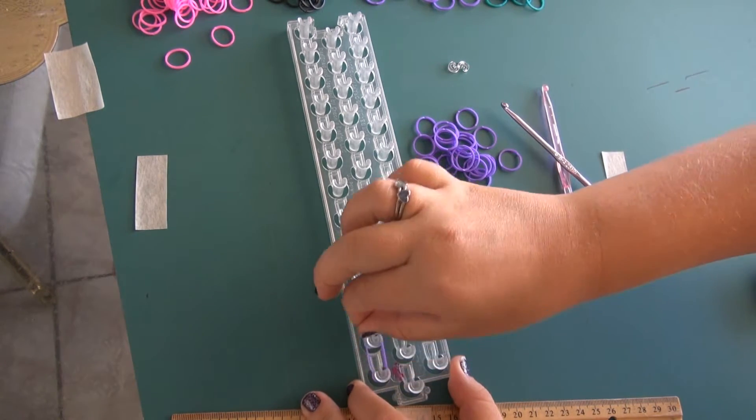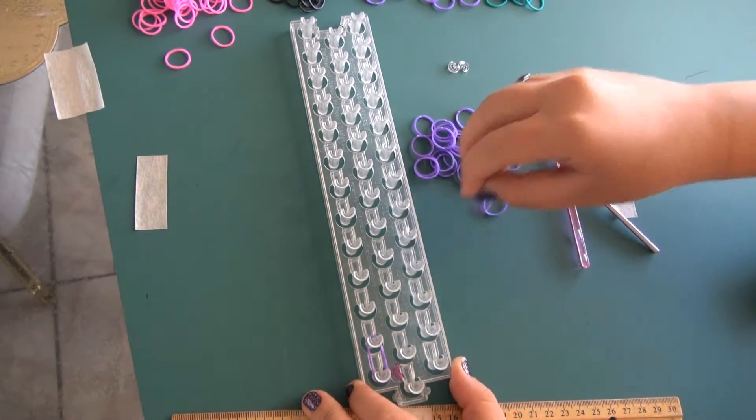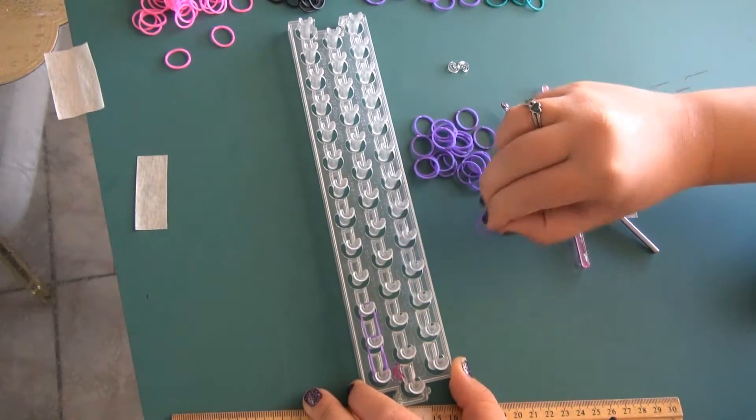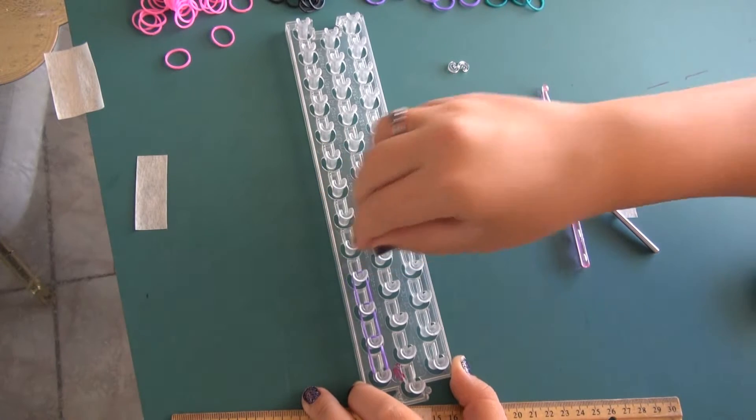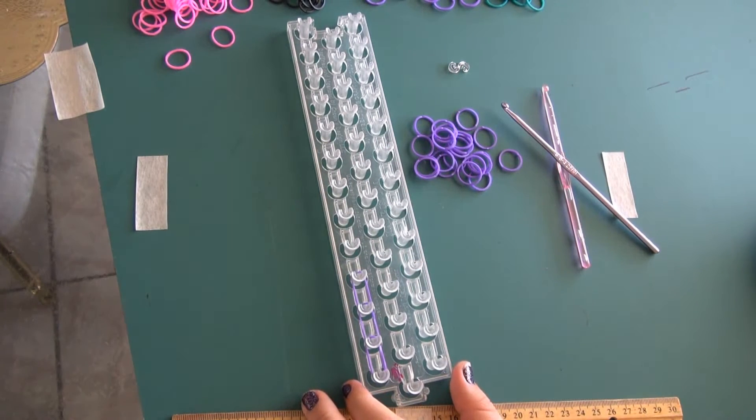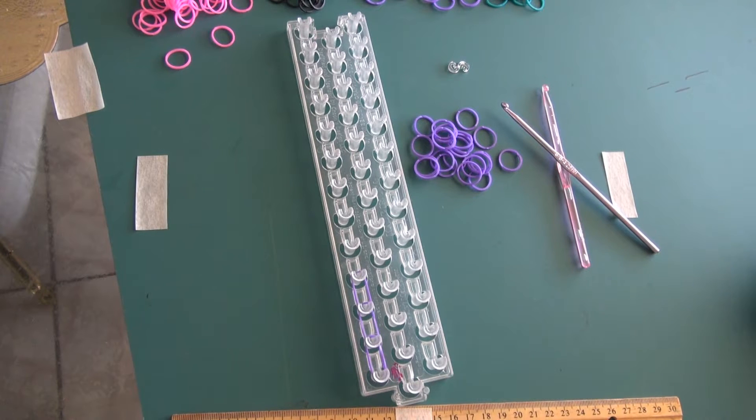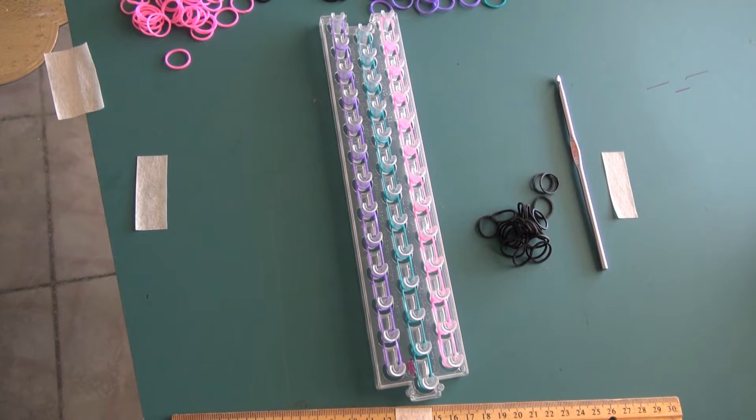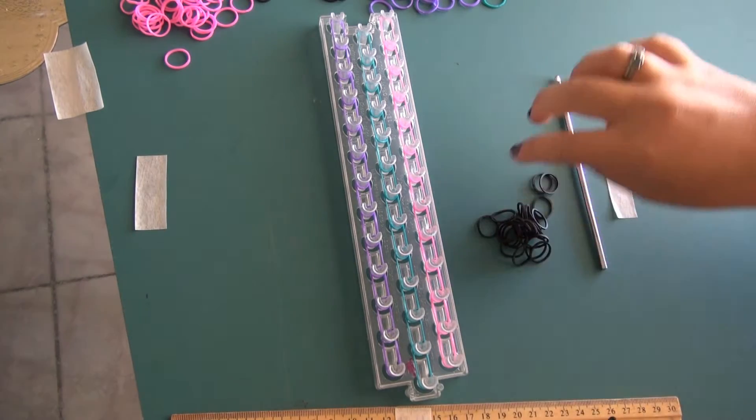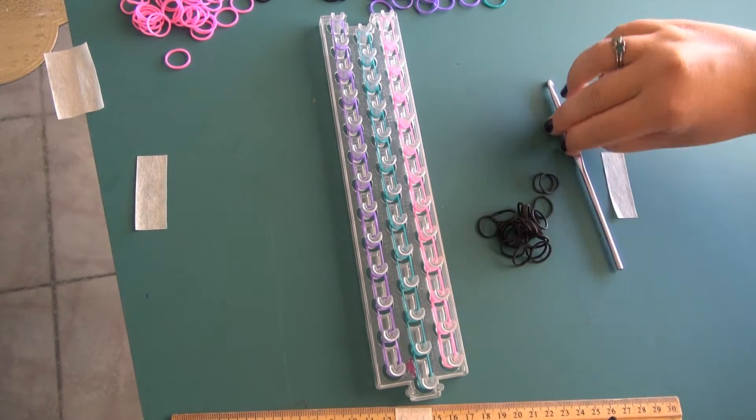So now you just start placing the rubber bands, starting with the peg closest to you going up. Continue this with all three pegs. Now that we have that completed, you want to make sure you push down all your rubber bands because we will need to place more on top of those.